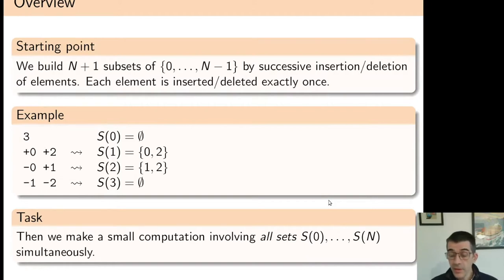For instance, starting with the empty set, we can first add 0 and 2, then remove 0 and add 1, and finally remove 1 and 2. Each element is inserted and deleted exactly once.